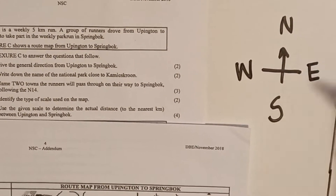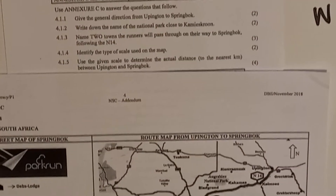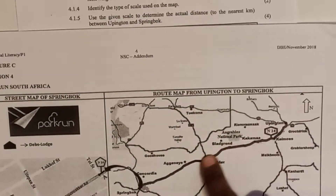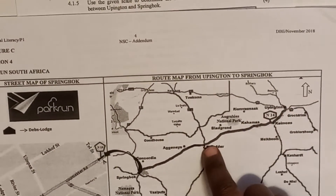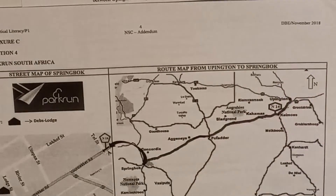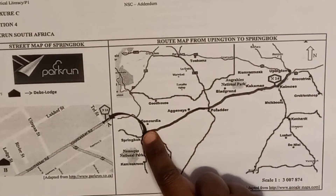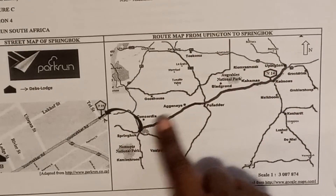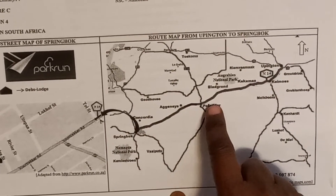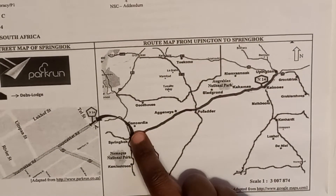When they talk about general direction, they mean moving from one place to another. Looking at the map, they go from Uppington to Springbok — they're going down, so they're going South. But they're not going straight South; they're going South in a westward direction. So your answer is South West.